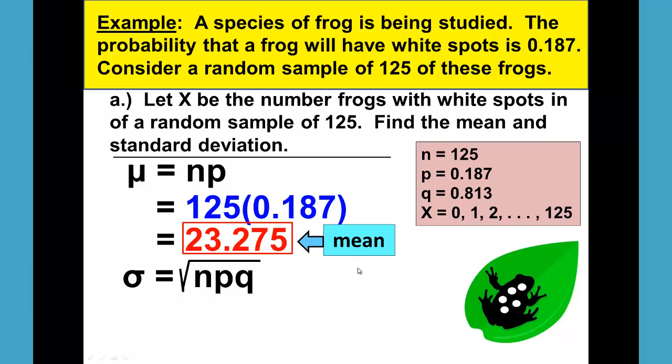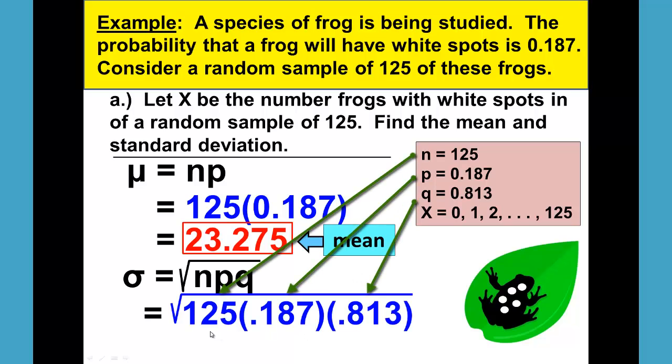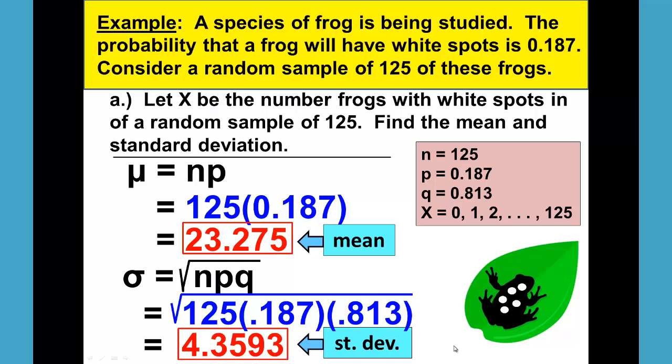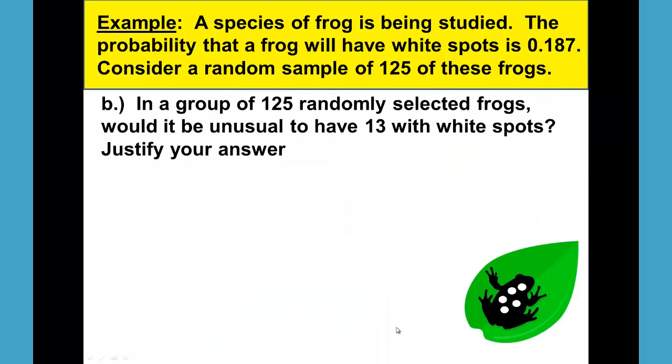The standard deviation is the square root of n times p times q. The square root of 125 times 0.187 times 0.813. Please be careful in putting this in your calculator and do not end your square root prematurely. You should get 4.3593 as your standard deviation.